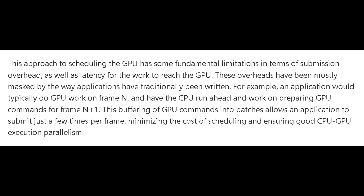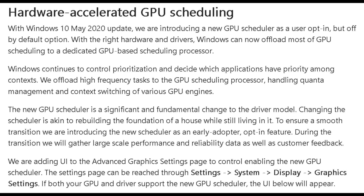With hardware accelerated GPU scheduling, this changes the way it handles instruction output to the GPU. Instead of relying on one main high priority thread from the CPU, the GPU can now manage its own resources itself, such as GPU memory, while Windows continues to control prioritization. High frequency tasks are offloaded to the GPU scheduling processor, handling quantum management and context switching of various GPU engines. In theory this should reduce overhead, resulting in less latency.